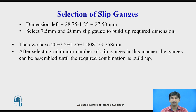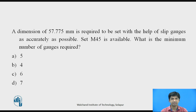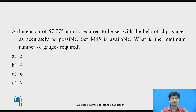After selecting the minimum number of slip gauges in this manner, the gauges can be assembled until the required combination is built up. Now pause this video and try to answer the following question: a dimension of 57.775 mm is required to be set with the help of slip gauges as accurately as possible, and set M45 is available. What is the minimum number of gauges required? Options: 5, 4, 6, or 7.